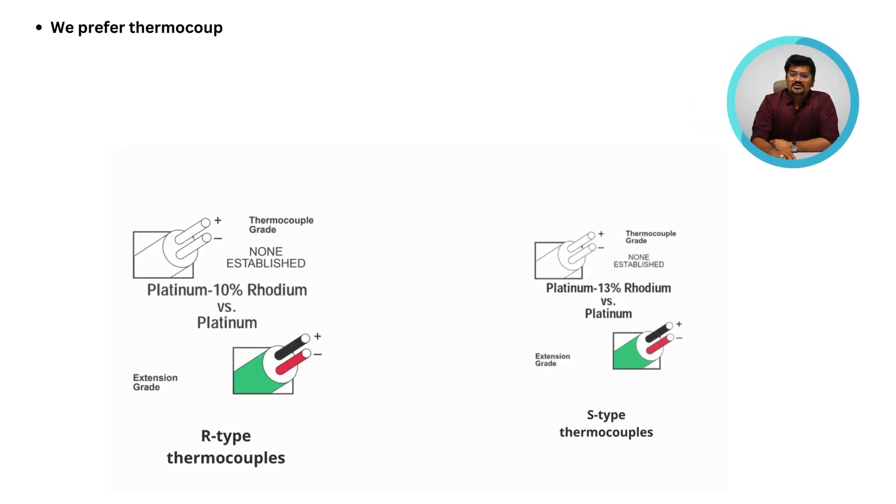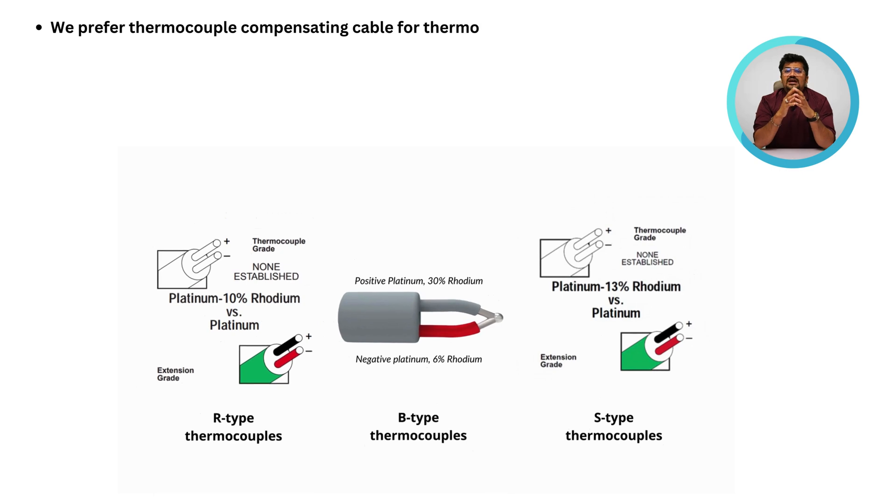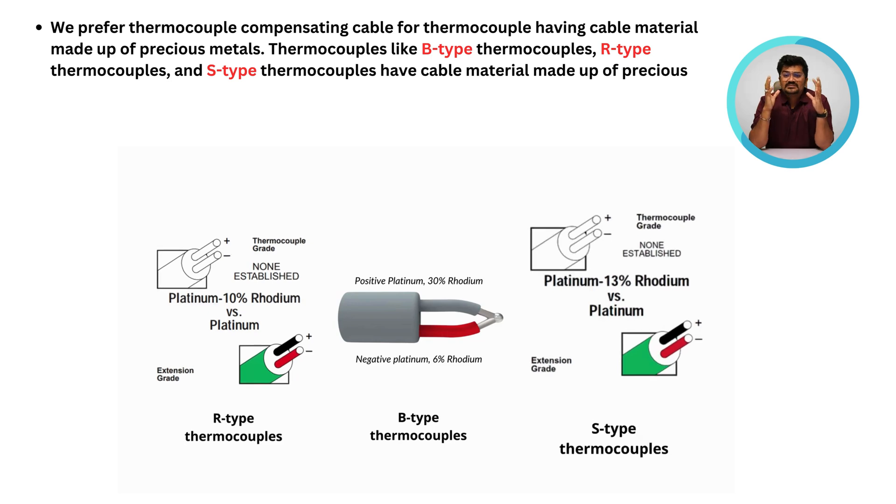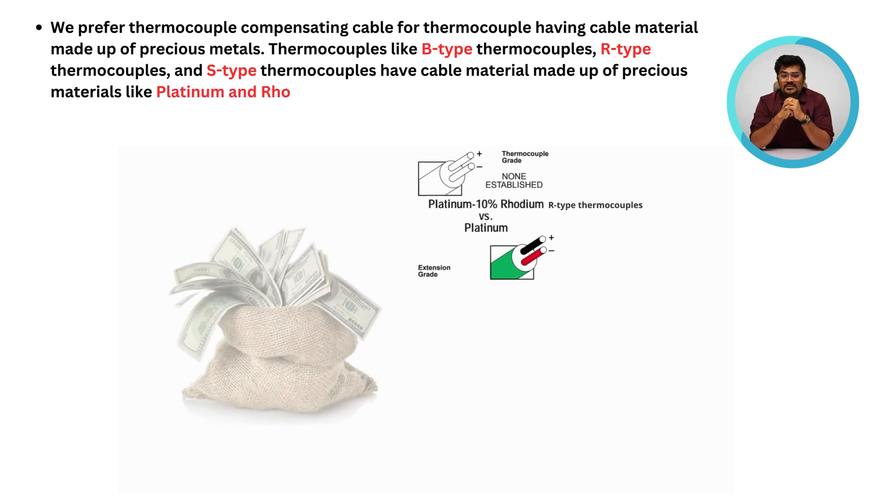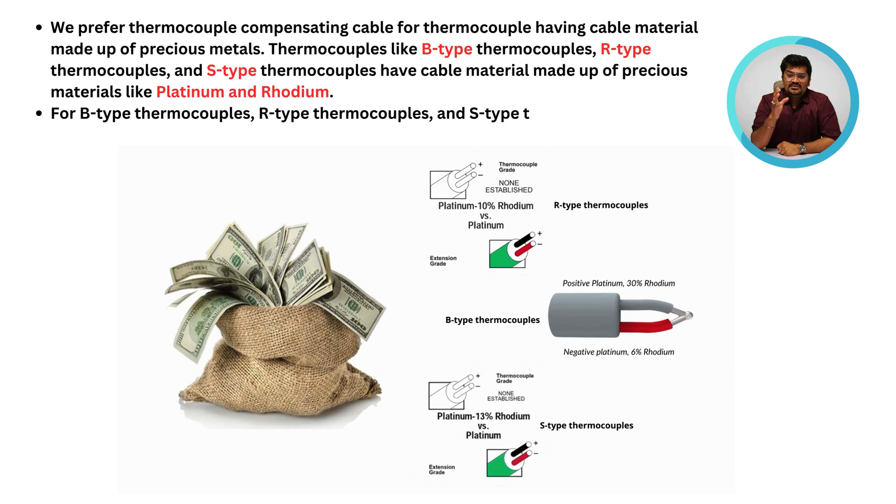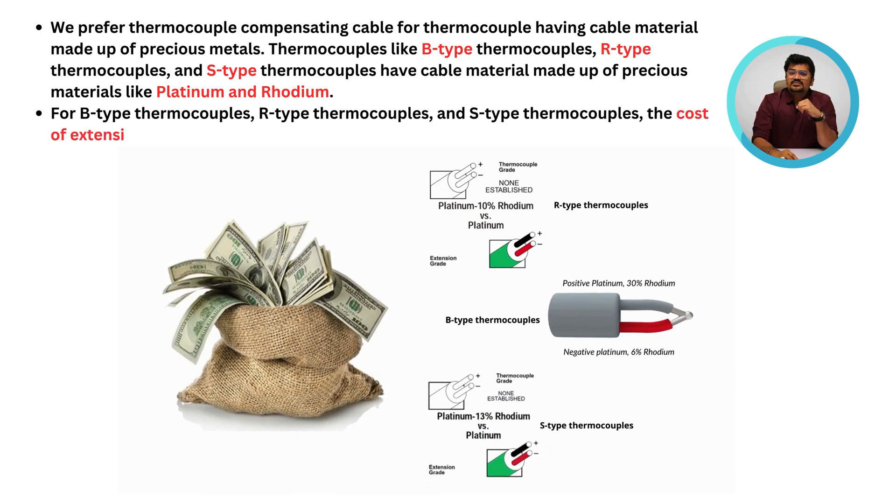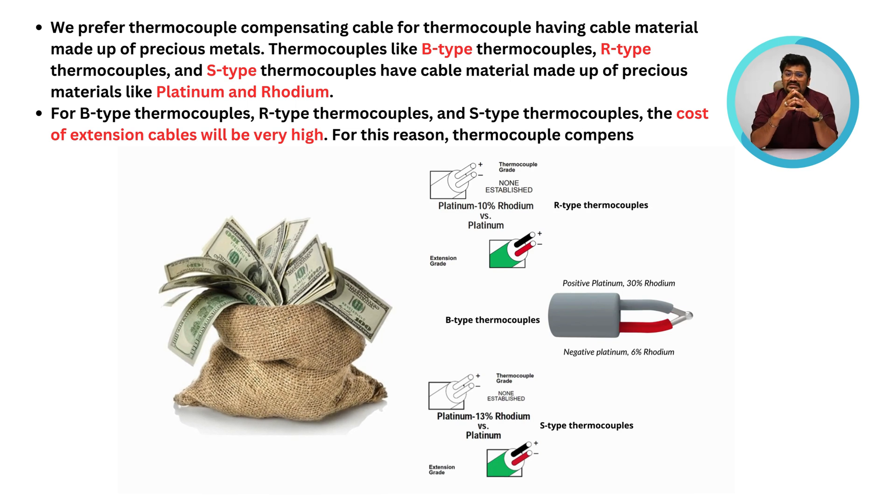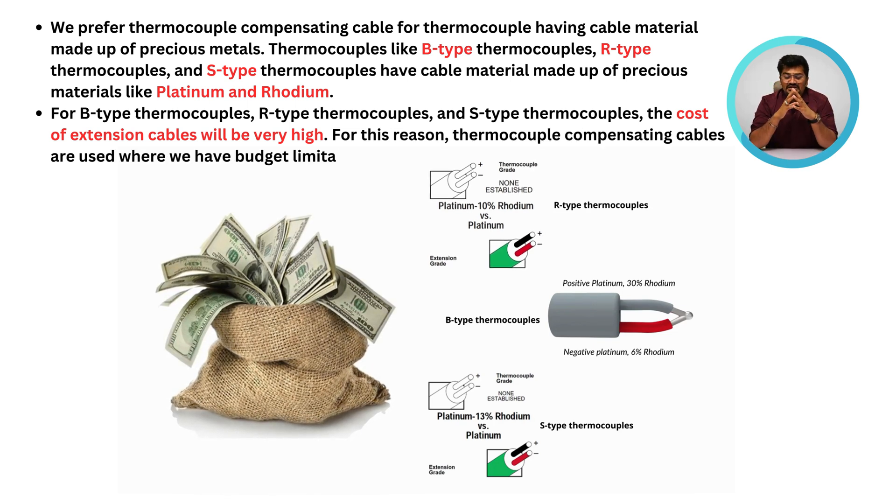We prefer thermocouple compensating cable for thermocouples having cable material made up of precious metals. Some examples are like B-type thermocouple, R-type thermocouple, and S-type thermocouple, which have cable material made up of precious metals like Platinum and Rhodium. For B-type, R-type, and S-type thermocouples, the cost of extension cable will be very high. For this reason, thermocouple compensating cables are used where we have budget limitations.